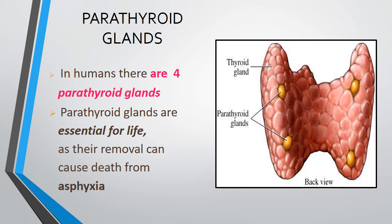Now we will see the parathyroid gland. In humans, there are four parathyroid glands, shown in yellow in the figure. They are very essential for life, and their removal can cause death from asphyxia.